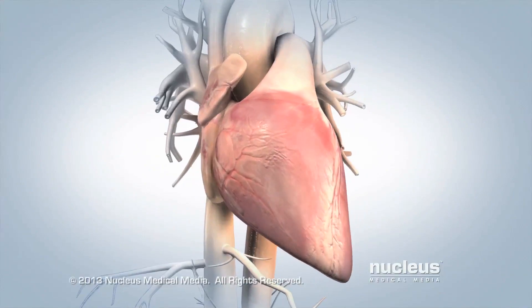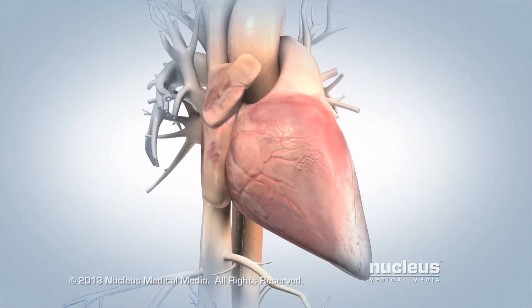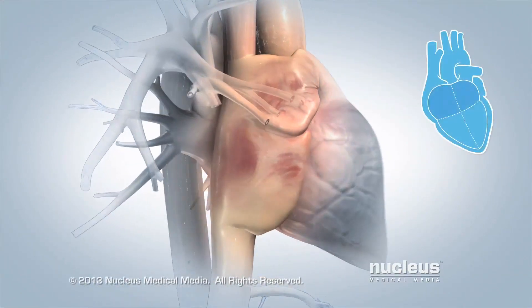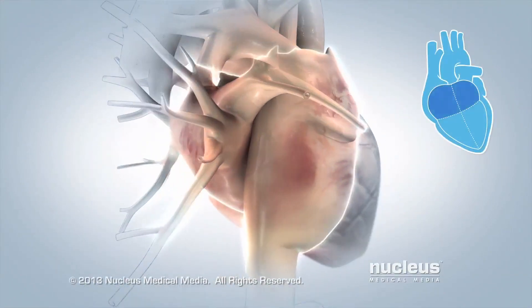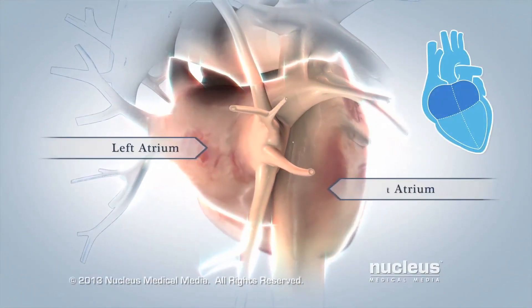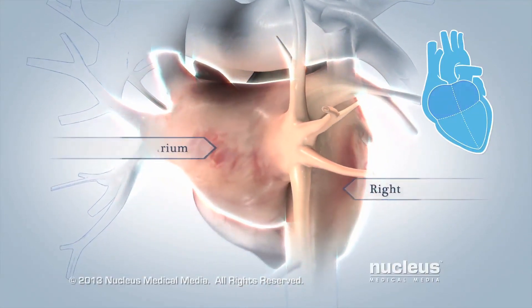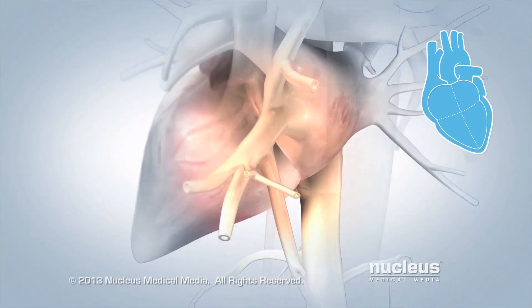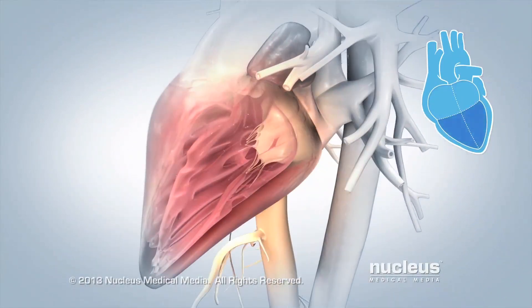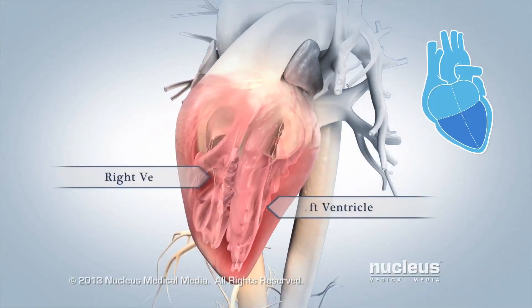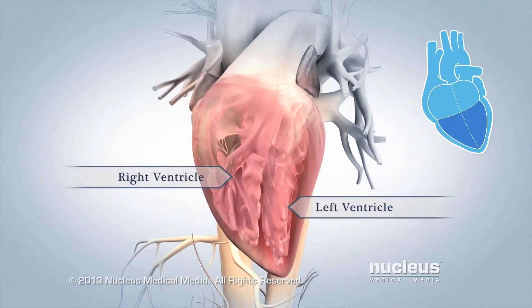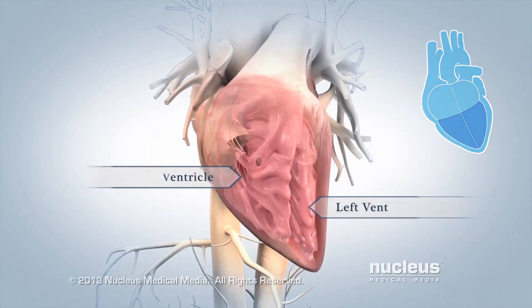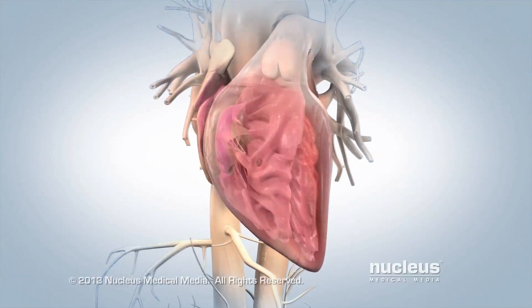Your heart has four chambers. Two upper chambers, called the left and right atria, and two lower chambers, called the left and right ventricles, contract in a steady rhythm known as your heartbeat.